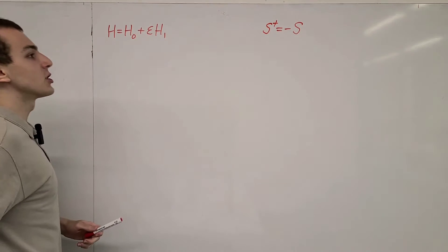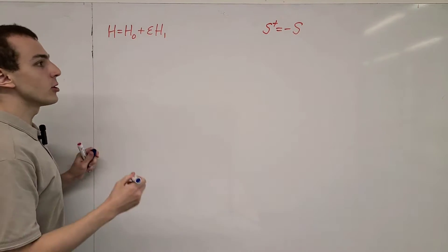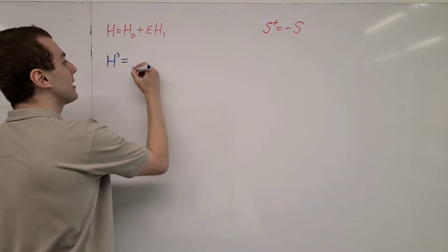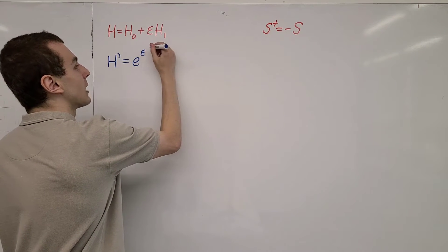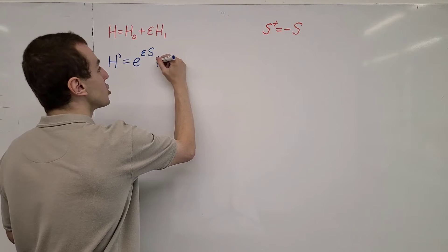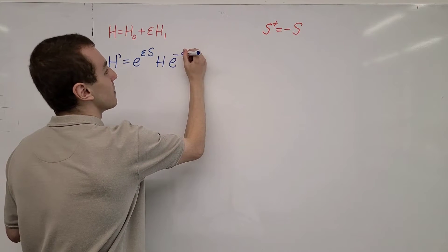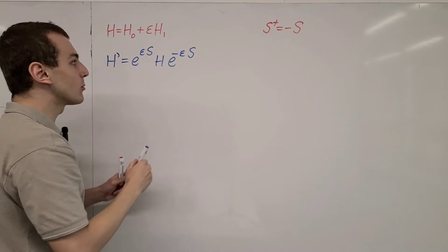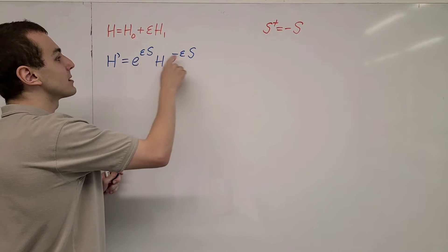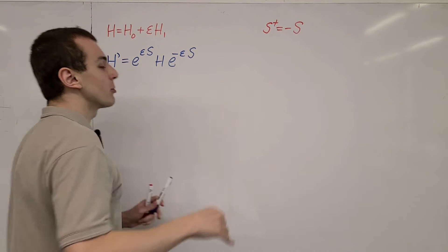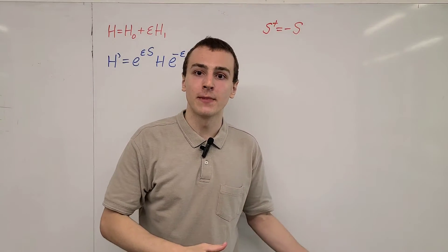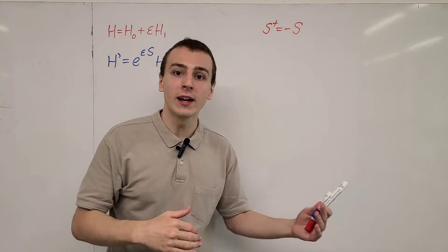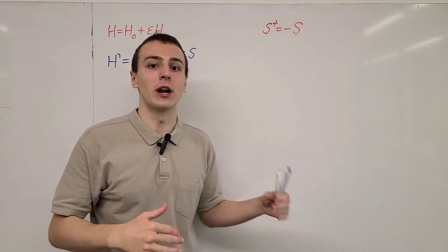The unitary transformation has the following form. H-prime, the transformed version of the Hamiltonian, is equal to the exponential of epsilon S times H times the exponential of minus epsilon S. Epsilon is a parameter that we can set equal to 1, but it's useful to keep it in the equations to track the order of each term. Zeroth order terms have epsilon to the power of 0, first order terms have epsilon to the power of 1, and second order terms have epsilon squared. Any terms with epsilon to the power of 3 or higher will be neglected.